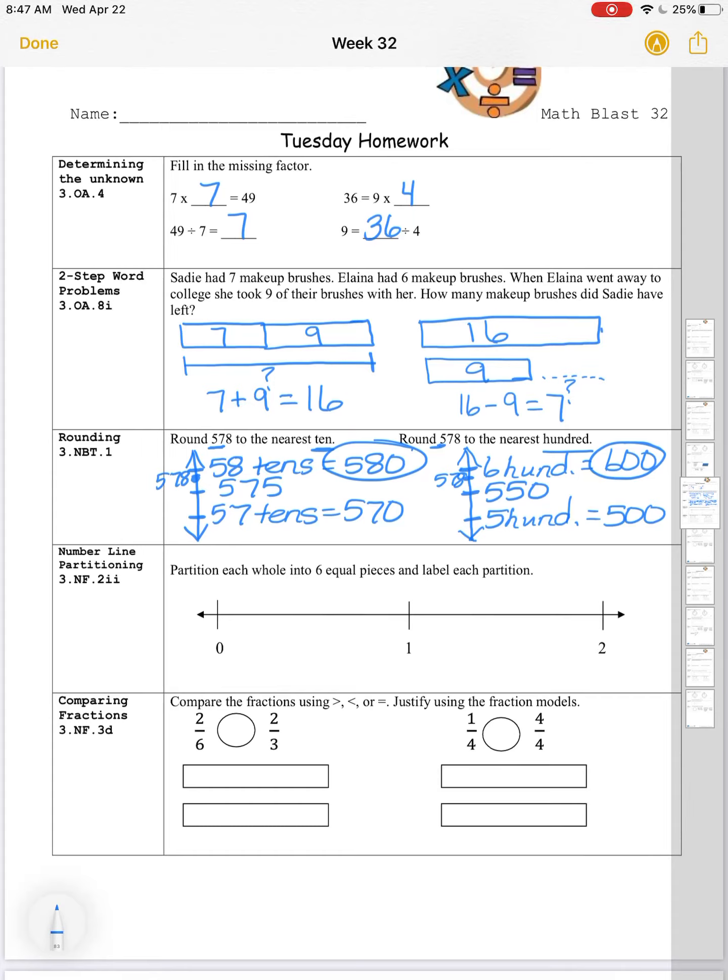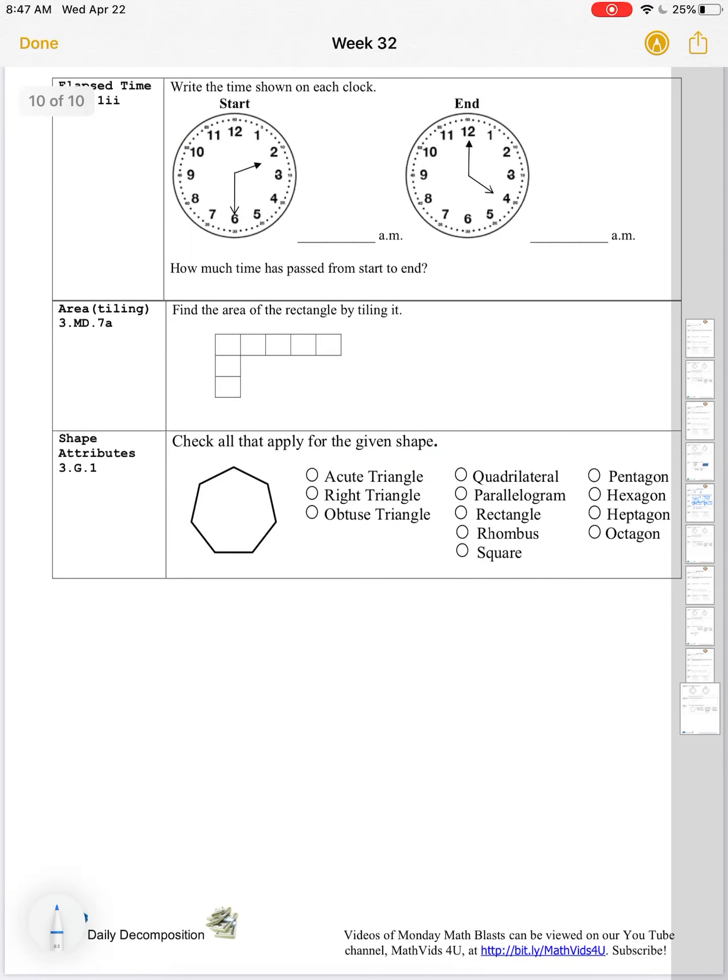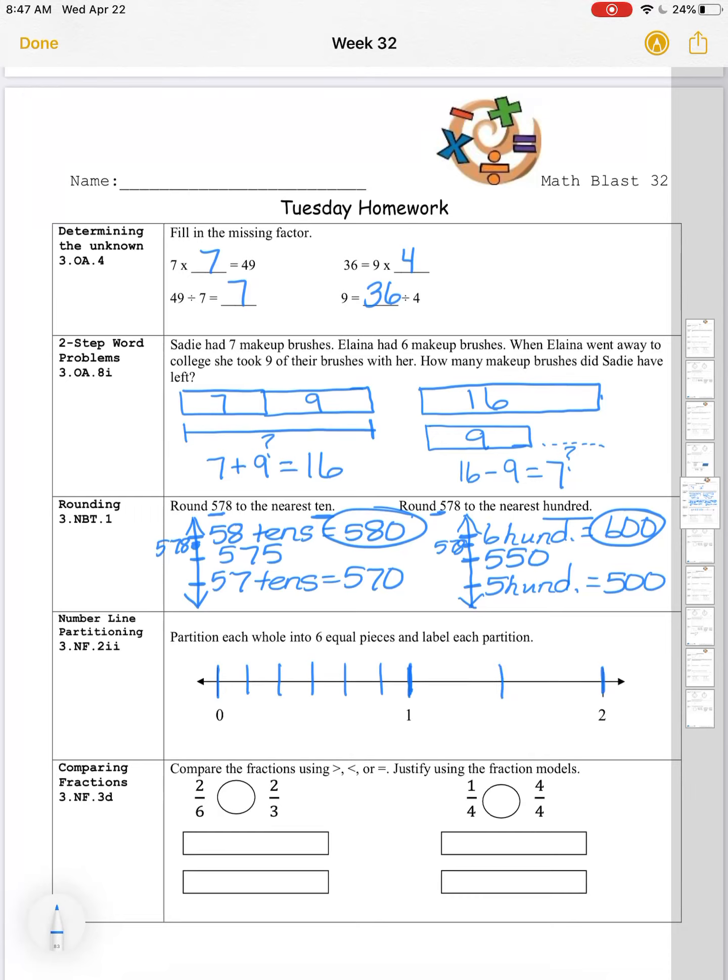Number line partitioning. Partition each whole into six equal pieces and label each partition. Now be careful here, because our number line is going from zero to two, so that's not one whole, that's actually two wholes. We want to partition each whole into six equal pieces. So between zero and one, I want six equal parts. Between one and two, I want six equal parts. Now we need to label each partition. So this would be zero sixths, and then we would continue: one sixth, two sixths, three sixths, four sixths, five sixths, and one whole would be six sixths. We can continue on. We have seven sixths, eight sixths, nine sixths, ten sixths, eleven sixths, and two wholes would be twelve sixths, because one whole is six sixths, so another whole, six sixths plus six sixths would be twelve sixths.